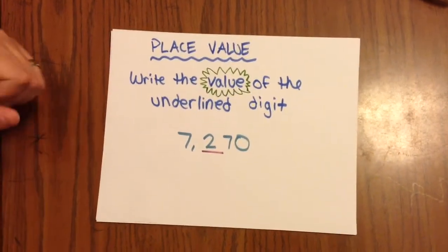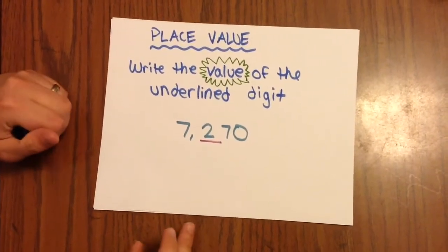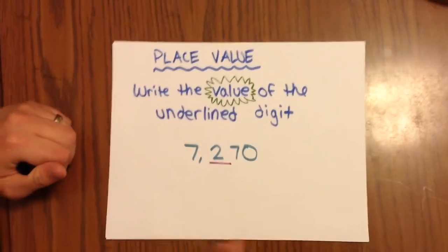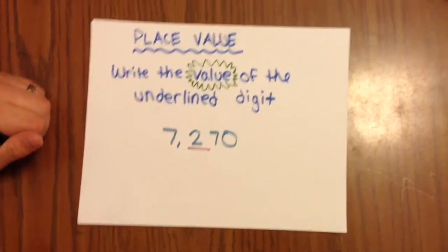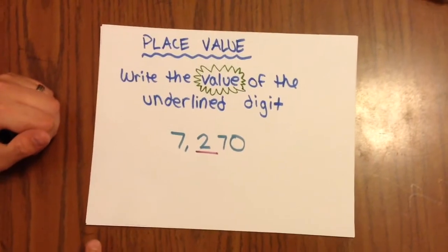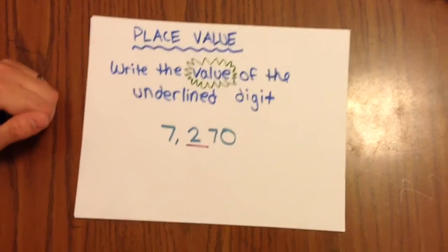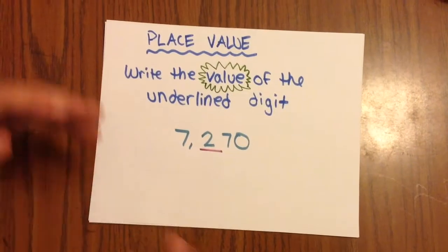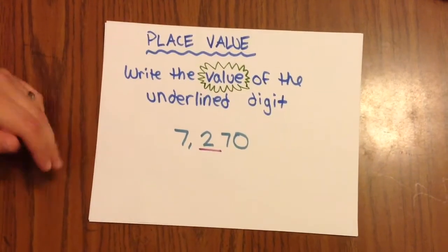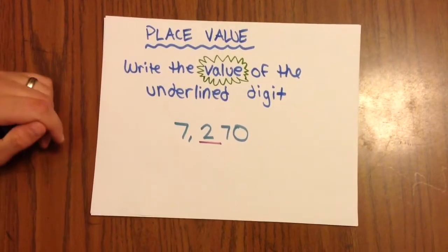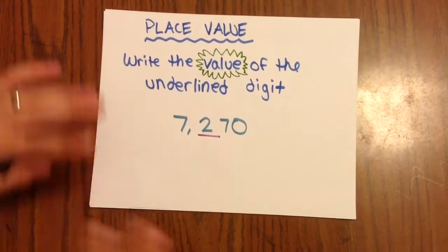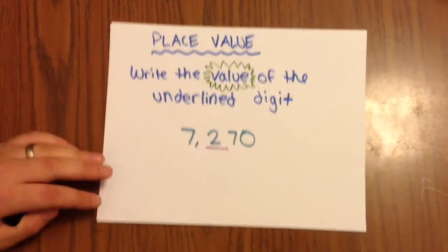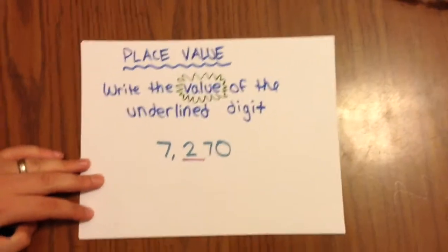Just remember that a value is going to make sense if you use it as a price. So if I say those headphones are valued at $79, that makes sense because that's a number. But if I say those headphones are valued at the tens place, that doesn't make much sense. So remember that the value is going to be a number.